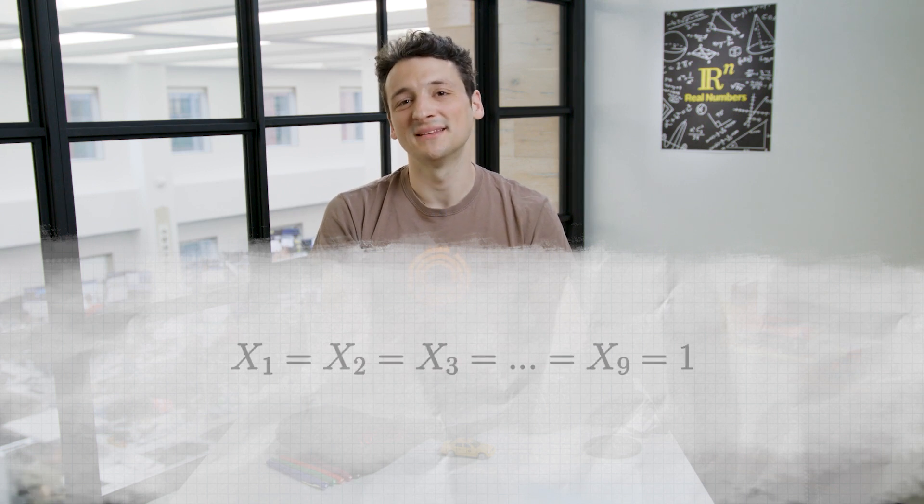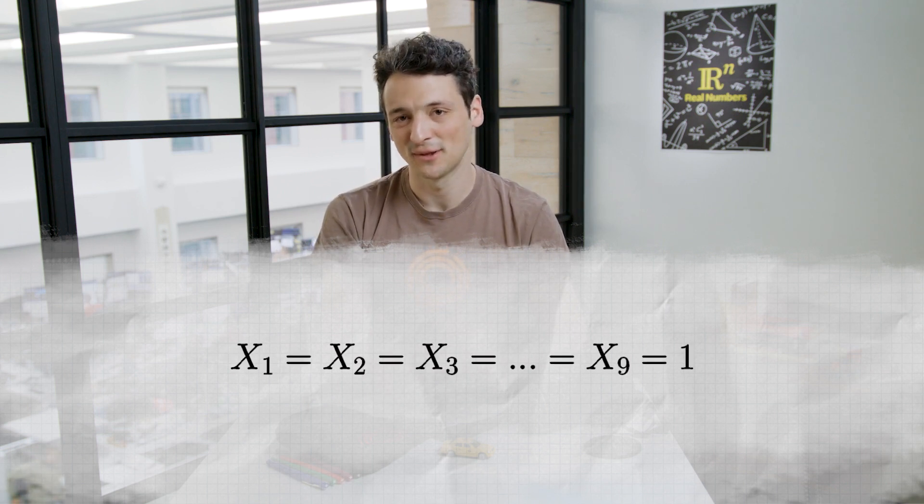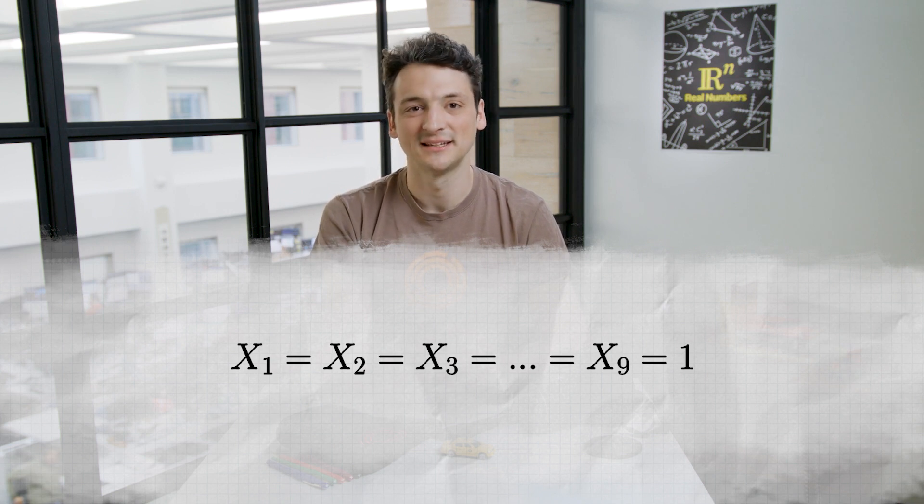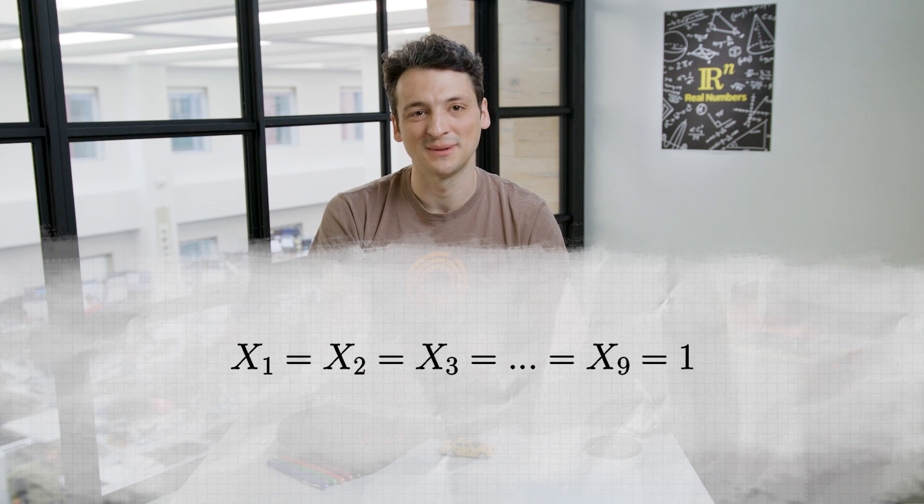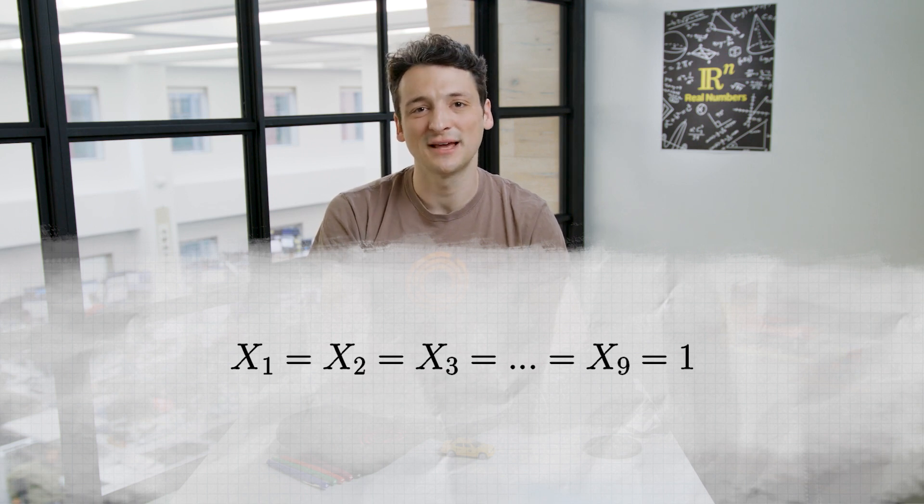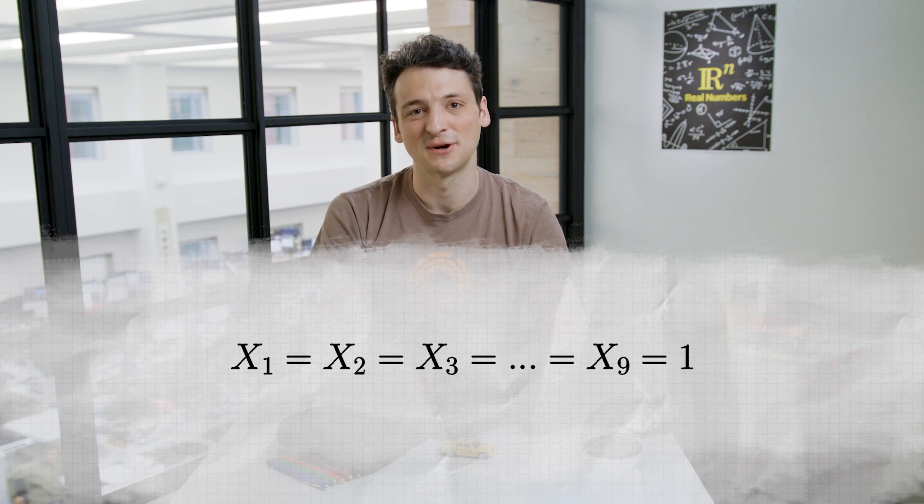Imagine the extremely unlikely scenario that x sub 1 equals x sub 2 equals x sub 3 all the way up to x sub 9 are all 1. That is, the first 9 rows of the parade all manage to be instep. Then there are either 4 musicians who start with their left foot, or 4 musicians who start with their right foot, remaining for the final row.